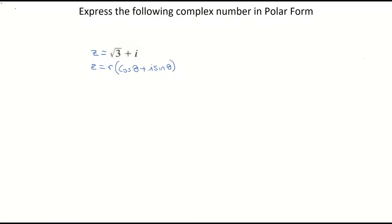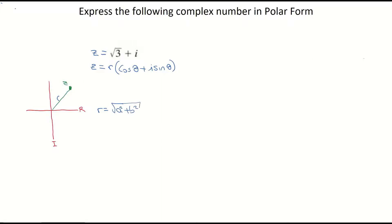When doing these questions, it's helpful to do a quick sketch of your original complex number on the Argand diagram so you can see where it's located. Root 3 plus 1i would be located in quadrant 1. The length from the center out to complex number Z is known as R, the radius, or the modulus of the complex number. The formula for finding the modulus is the square root of a squared plus b squared.